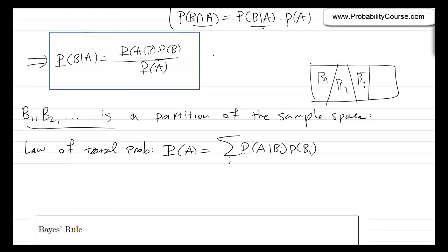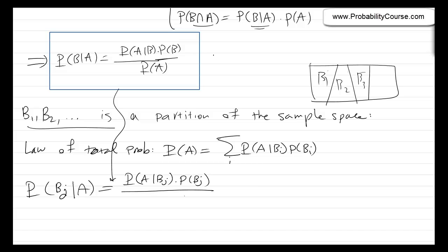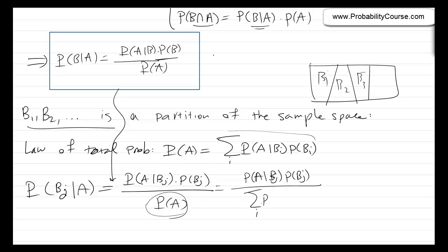So that's the law of total probability. Now suppose that I'm interested in the probability of Bj given A, for some j — j could be 1, 2, 3, and so on. I can use the Bayes' rule here. So this is equal to probability of A given Bj times probability of Bj divided by probability of A. And because I have the law of total probability, I can write probability of A as the summation. So I can write probability of A given Bj times probability of Bj over summation over i of probability of A given Bi times probability of Bi. This is just another format for the Bayes' rule.